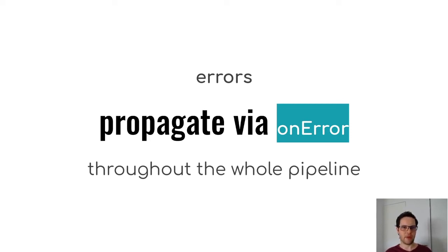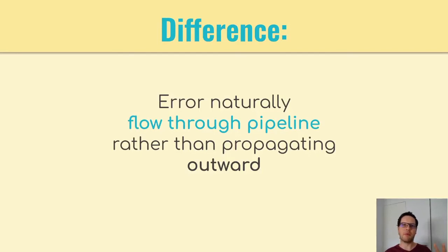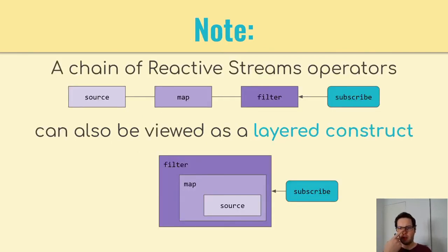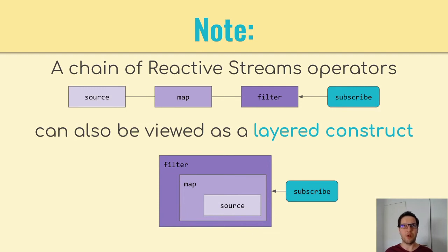That may seem a bit different from structured concurrency where errors propagate from child to parent, but if you look at the chain of operators as a layered construct — the outermost layer is the filter operator that wraps the map, which itself wraps the source — an error in the source would propagate outward through map, then filter, then to the subscriber. So actually it's the same.